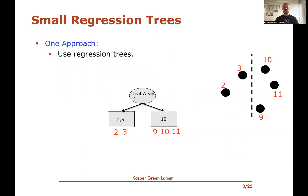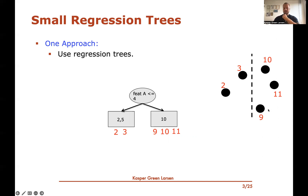What we saw in the previous video — just a quick recap — was regression trees for solving this problem. Regression trees are trees where in the nodes you ask questions such as: is feature A less than or equal to 4? This creates a vertical line that separates the data into two classes. Depending on the outcome of this comparison, you either descend to the left child or the right child. When you reach the leaves, you return the value stored at the leaves.